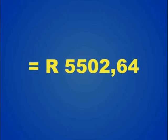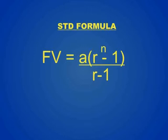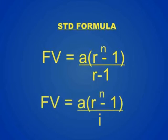That brings us to our standard formula: Future Value = A(R^N − 1) / i, where i is the interest rate per period.